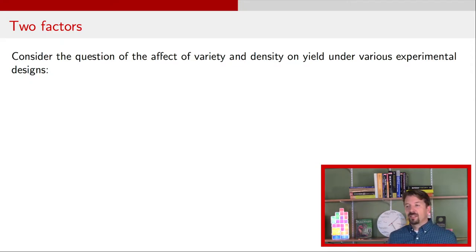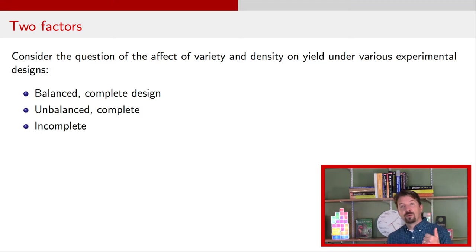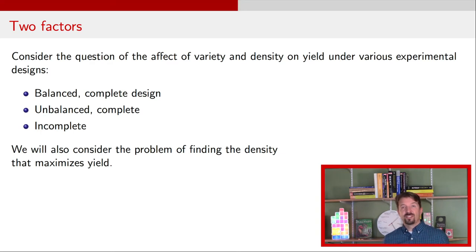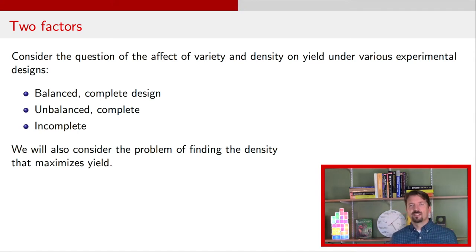We're going to think about an experiment that has to do with the effect of variety and planting density to determine yield in an agricultural experiment. We'll go through a series of experimental designs: a balanced complete design, then what happens if it's unbalanced but complete, and then what happens if it's incomplete. In the next video, we'll also discuss what if your scientific question is specifically about finding an optimal density for yield, which requires a distinct model.